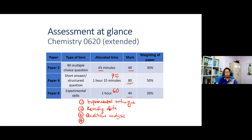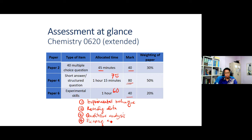Nanti kita akan tengok dengan lebih lanjut tentang kualitatif analisis. Dan soalan yang terakhir adalah bersangkutan dengan planning experiment. Pelajar akan diminta untuk merancang penyiasatan berdasarkan permasalahan yang akan diberikan. Permasalahan ini tidak hanya tertumpu kepada topik-topik kimia, ia juga boleh menjadi permasalahan dalam kehidupan seharian. Tujuan utama soalan ini adalah untuk menguji kemahiran pelajar dalam merancang dan melaksanakan satu penyiasatan menggunakan alatan dan kaedah kimia yang betul.